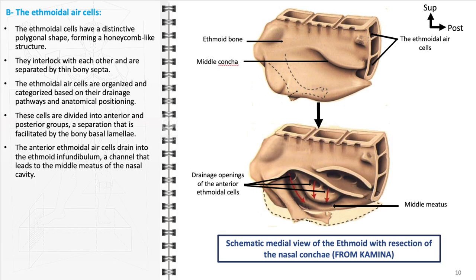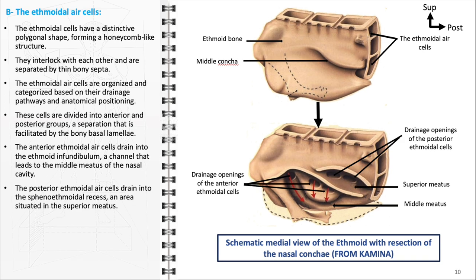The anterior ethmoidal air cells drain into the ethmoid infundibulum, a crucial channel that leads to the middle meatus of the nasal cavity. This drainage pathway is important for the normal clearing of mucus and debris from the sinuses, and blockages in this pathway can lead to sinus infections and other complications. Conversely, the posterior ethmoidal air cells drain into the sphenoethmoidal recess, an area located in the superior meatus. This distinct drainage pattern plays a role in how conditions affecting these cells are treated and managed.